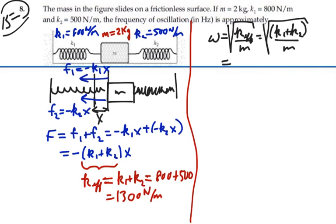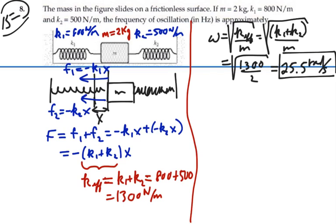So this angular frequency is going to equal 1300 divided by 2 square root, and that's equal to 25.5 radians per second. So that's our angular frequency.